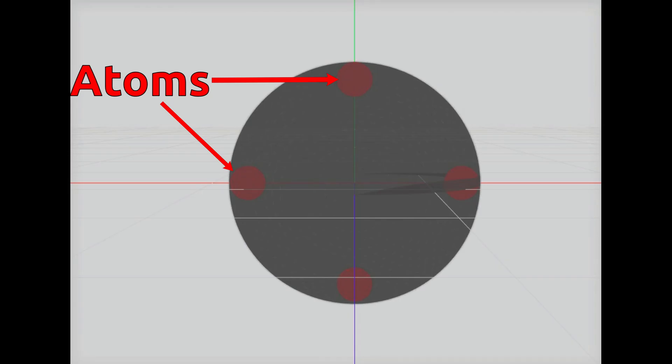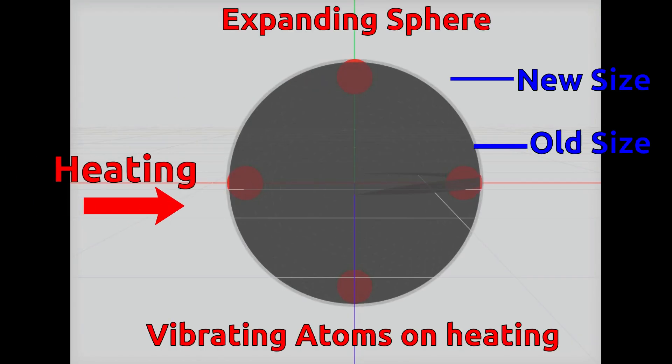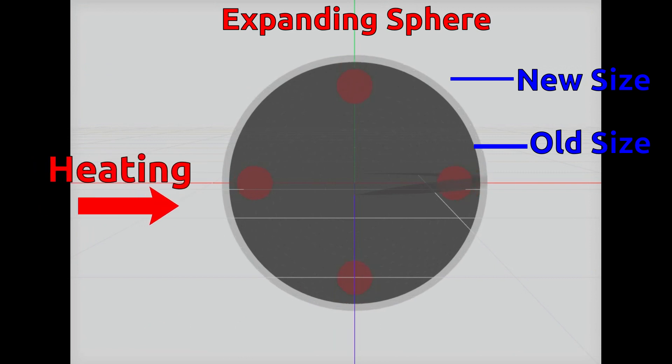We have already seen that adding heat to matter causes its atoms or particles to vibrate more and more. As these atoms vibrate, the distance between them increases, and as a result, the size or volume of matter increases.